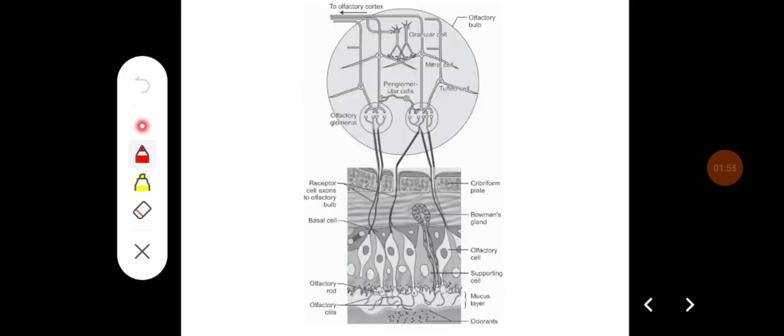This is a diagram showing the olfactory mucosa, which you can see odorants, then you have mucus layer, then you have supporting cells and olfactory cells. And we have Bowman's glands, which continuously secrete mucus.